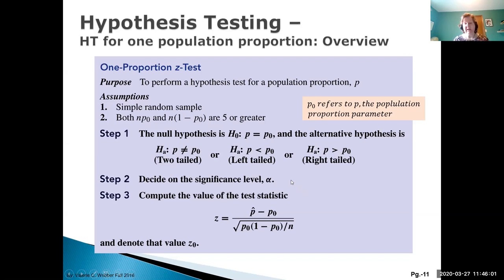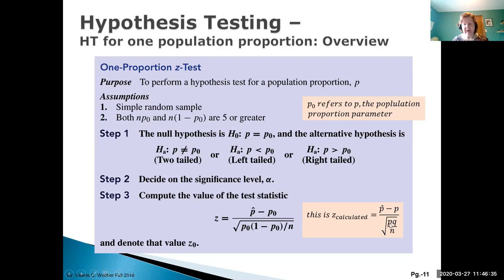We then have our given or decided-upon level of significance and compute our test statistic. Z-calculated equals the sample proportion minus the currently accepted population proportion, divided by the spread from the binomial model: root of PQ over N. Note that the P in the numerator and the P in the denominator are the same population proportion.